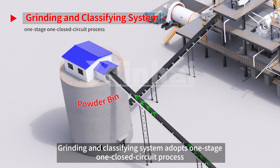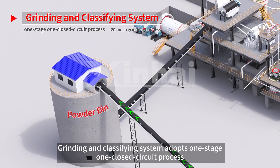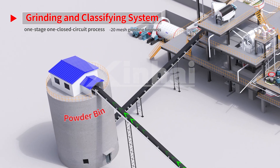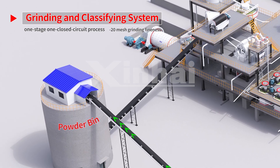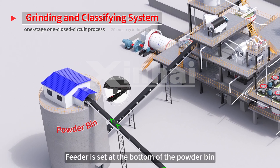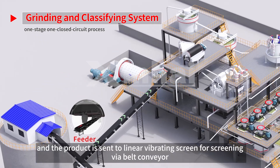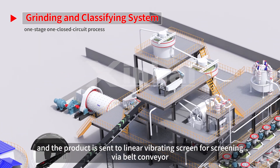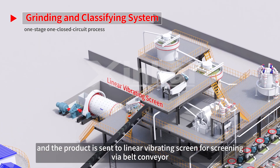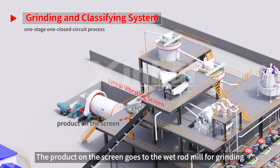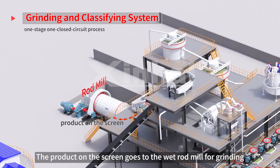The Grinding and Classifying System adopts a one-stage, one-closed circuit process with minus 20 mesh grinding fineness. A feeder is set at the bottom of the powder bin, and the product is sent to the Linear Vibrating Screen for screening via belt conveyor.